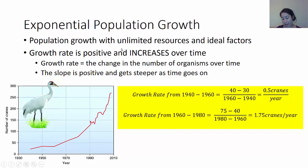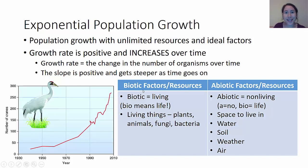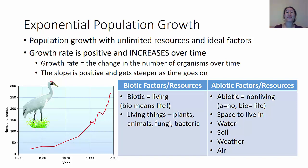Exponential population growth happens with unlimited resources and ideal factors. The factors I'm talking about are the resources and things that organism needs to survive. We categorize these into two groups. The first is biotic factors — biotic means living, like biology is the study of life. Living things can be plants, animals, fungi, bacteria — all things an organism might need to eat or have a mutualistic relationship with. There are also abiotic, or non-living, factors.